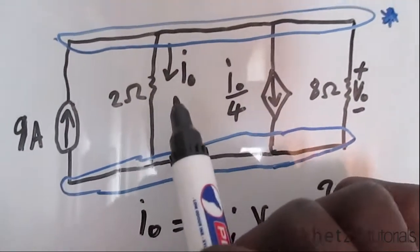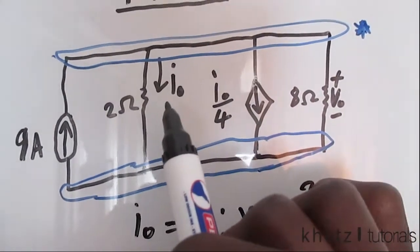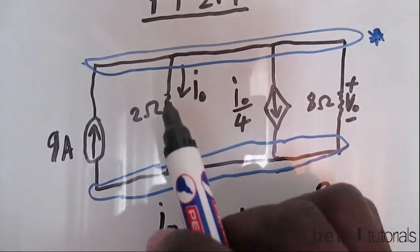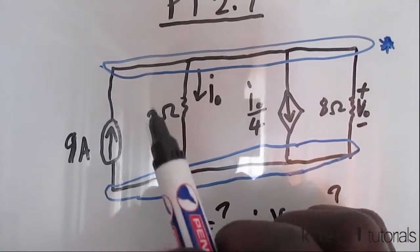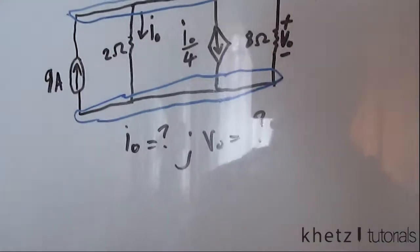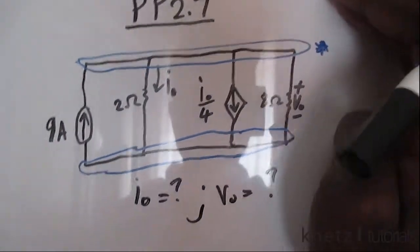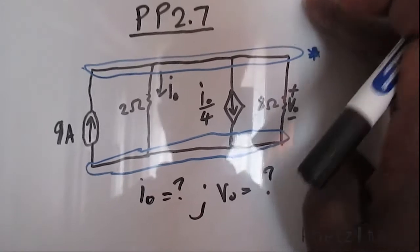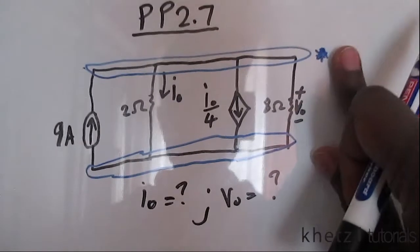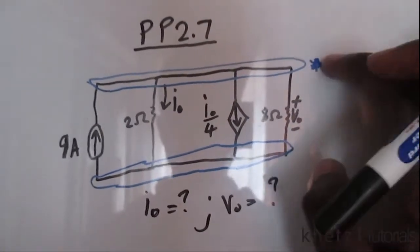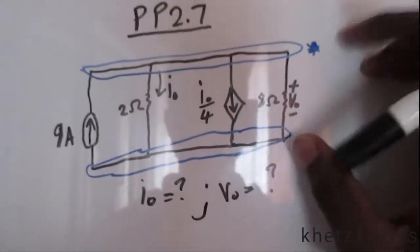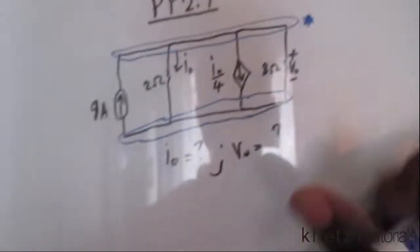i₀ is defined up here as the current which goes through this 2 ohm resistor. Now let's use some knowledge from the textbook which says if two or more elements share two nodes, as you can see all the elements here share two nodes, the elements are actually in parallel.